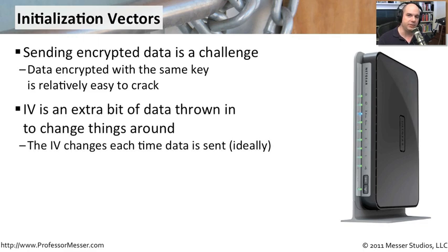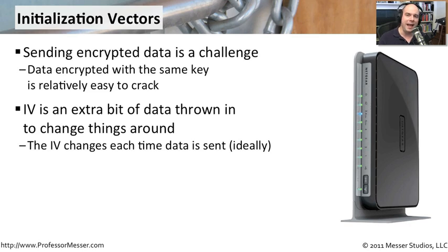That's where initialization vectors come into play. If you can change the key every time and yet have the key essentially the same, you make it very difficult for people to decrypt this. The IV — the initialization vector — is added to the key to essentially create a scrambled or different key every time. And it's done in a way so that the station on the other end is also able to know the initialization vector and essentially undo what was done with it.